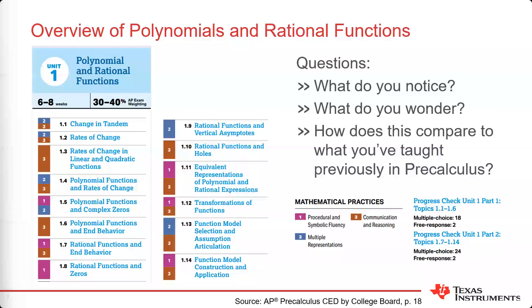There are mathematical practices listed in the right-hand corner: procedural and symbolic fluency — including fluency with technology — multiple representations linking graphical, numerical, algebraic, and verbal together, and communication and reasoning. The communication and reasoning piece is something not typically emphasized in pre-calculus. Students are doing rates of change and second-order rates of change of non-linear functions, which is pretty intellectually sophisticated for the pre-calculus level.